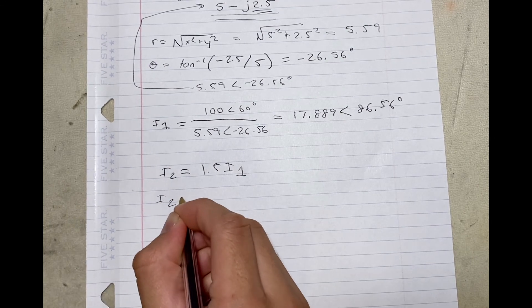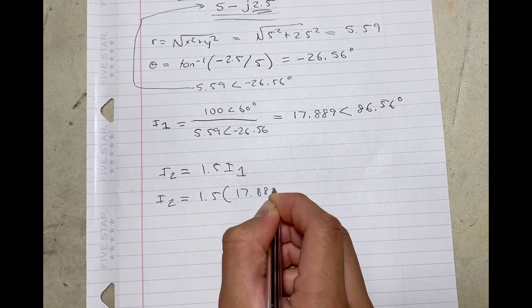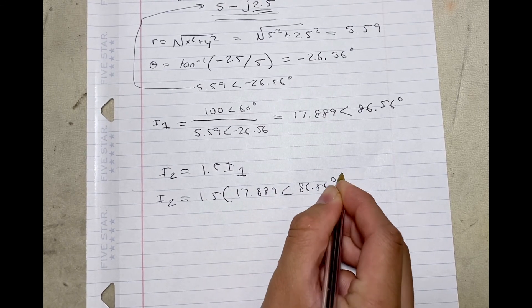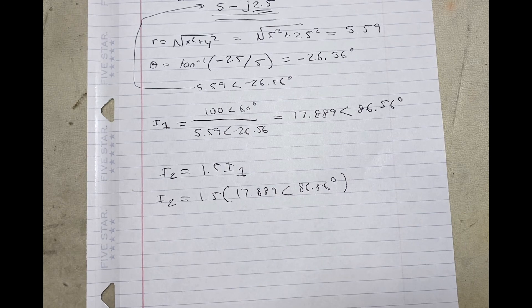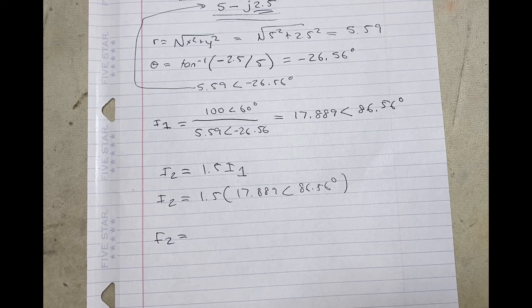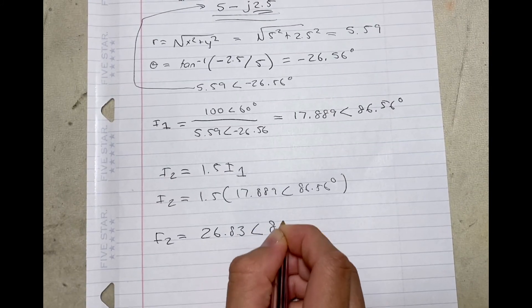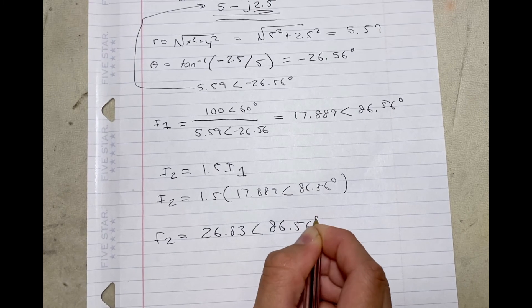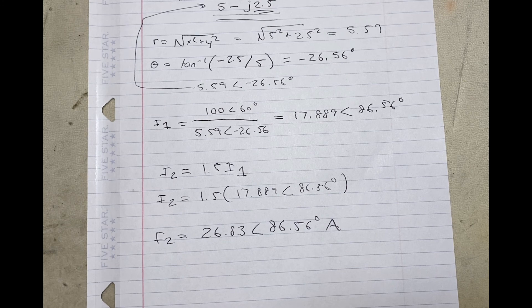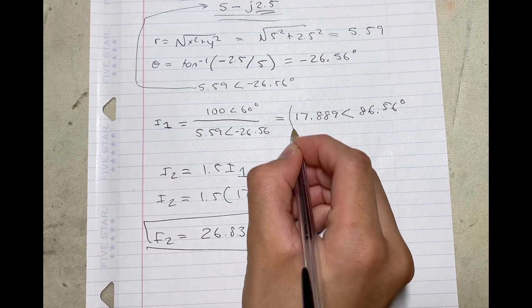So we get I2 is equal to 1.5 times 17.889 angle 86.56 degrees. This I2 is going to be equal to 26.83 angle 86.56 degrees, and of course the units are going to be amps. There's our I2 and there's our I1.